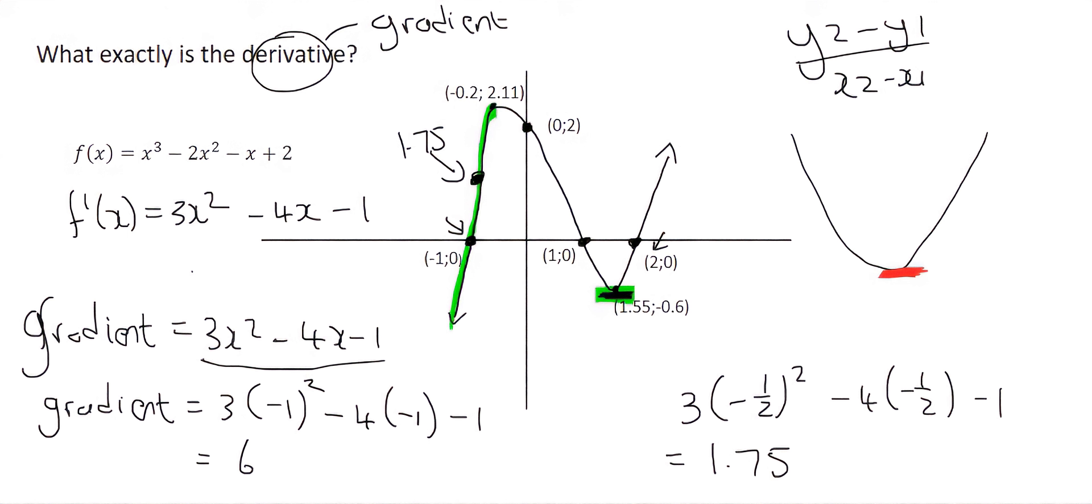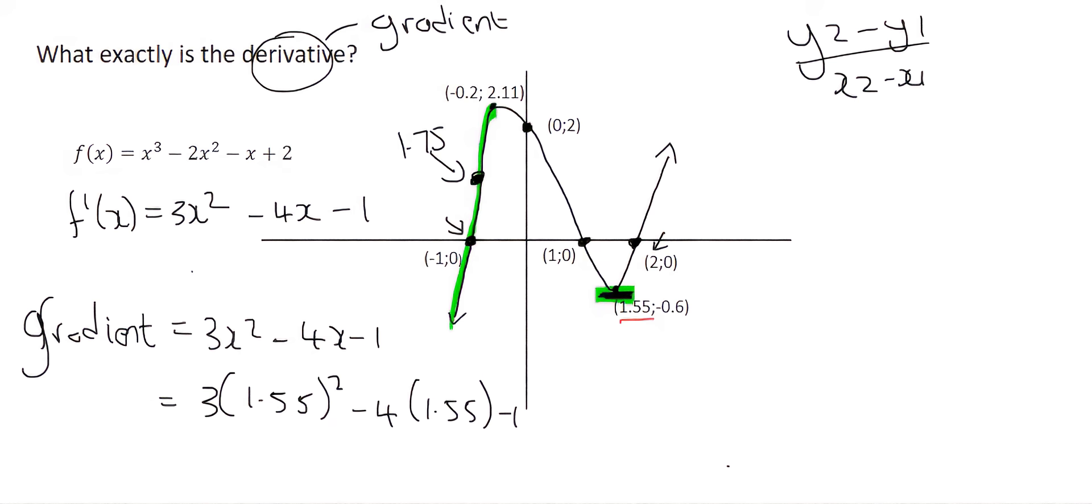So the way to tell is you plug in the x value, which is 1.55, you plug that into the gradient formula, and let's see what we get. So there I filled in 1.55 into the gradient formula in the place of x, and of course we're not going to get a perfect 0. We're going to get 0.0075. That's just due to rounding errors.